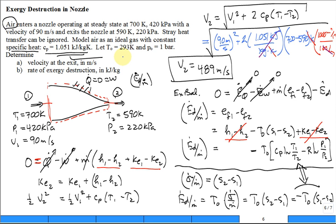And the answer is going to be 1.73 kilojoules per kilogram. E dot D divided by M-Dot.